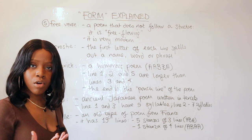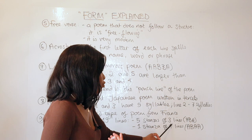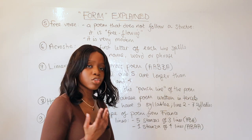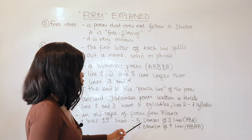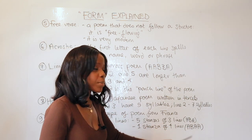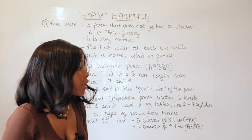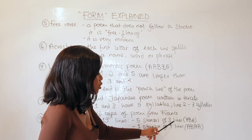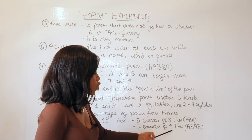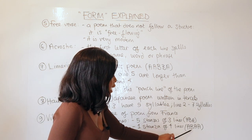You have five stanzas within a villanelle which are made up of three lines, and they follow the ABA structure. So of these 19 lines, this is how it's broken up: it has five stanzas of three lines which are an ABA rhyme scheme, then you have one stanza made up of four lines—what we would call a quatrain (three lines is a terset, four lines is a quatrain)—and it follows an ABAA rhyme scheme.